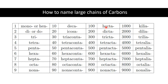What about 100? 100 is called hecta-; as a parent chain it is called hectane, and as a branch chain it is called hectyl. For 200 the word used is dictane, for 300 it is trictane, for 400 tetractane, for 500 pentactane, and then hexactane, heptactane, octactane, and nonaoctane.